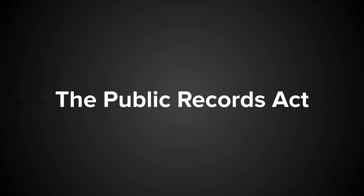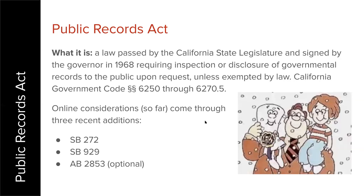The reason we're starting to see these things is that more and more items are getting tucked into the PRA and the Brown Act, because those are the two places the state legislature can put additional mandates that you can't get reimbursed for. The Public Records Act allows people to inspect your documents. A couple of new things have been added: AB929, which requires all districts to have a website, and SB272, which is the enterprise system catalog we'll talk about. There's also another optional one that I'm actually a big fan of.